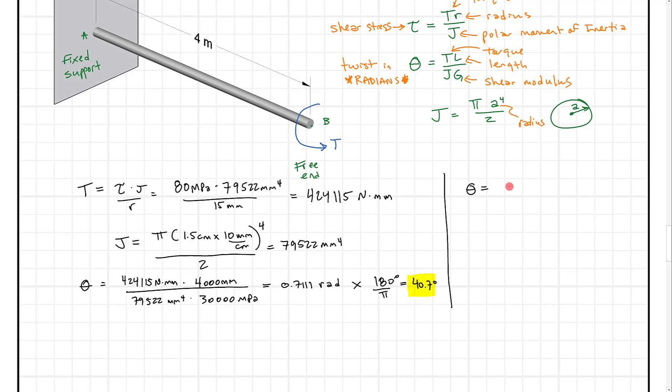So I'm just going to take theta and this equals TL over JG. But instead of T I'm going to write this equation in and see kind of what happens. So if we put this equation in tau times J divided by R, that's what we had for T over here, times the length divided by JG. Well the cool thing here is what happens is J goes away.